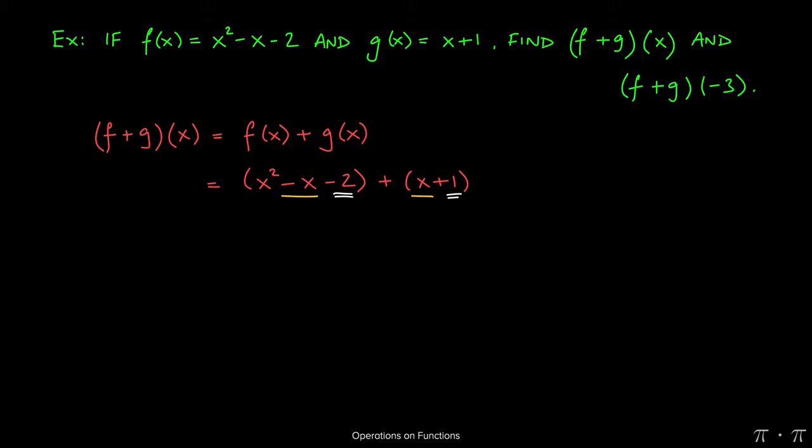So here we see that there's nothing really matched with x squared, so that's going to come along for the ride by itself. But we have a negative x and then a plus x, so these two will actually cancel each other out. One of them is negative, the other is positive.